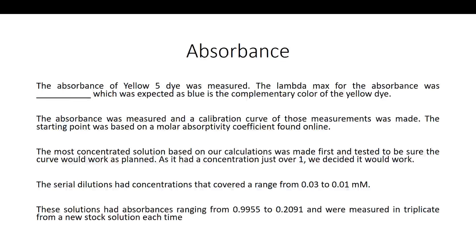We measured the absorbance of yellow 5. The lambda max for yellow 5 was around the blue color, which we expect because that's the complementary color of the yellow dye. We found we were in the linear range at just over one absorbance unit, and we measured absorbances of a series of solutions. We made sure we covered a range from about 0.1 to 1, which is generally the linear range of absorbance, and our dilutions had a range from 0.03 to 0.01 millimolar.